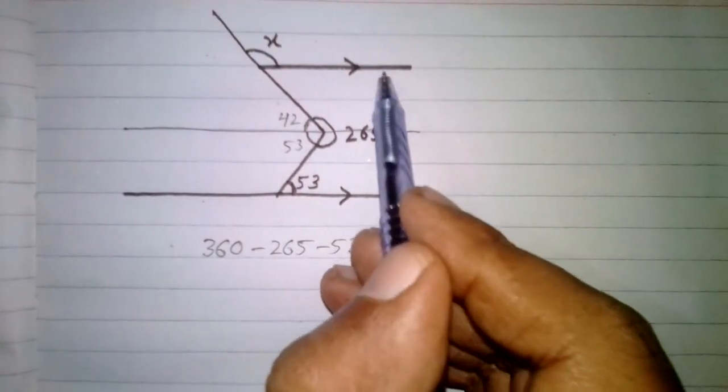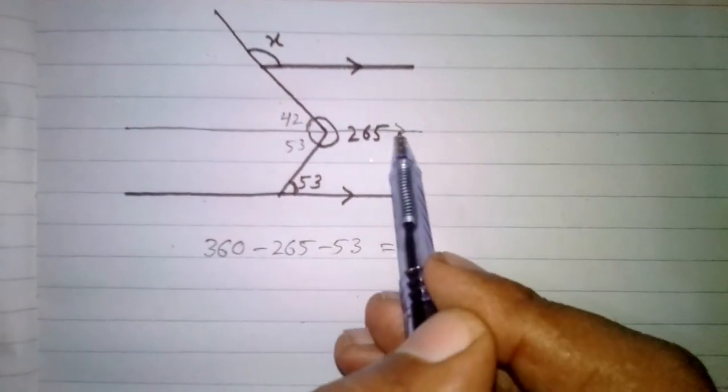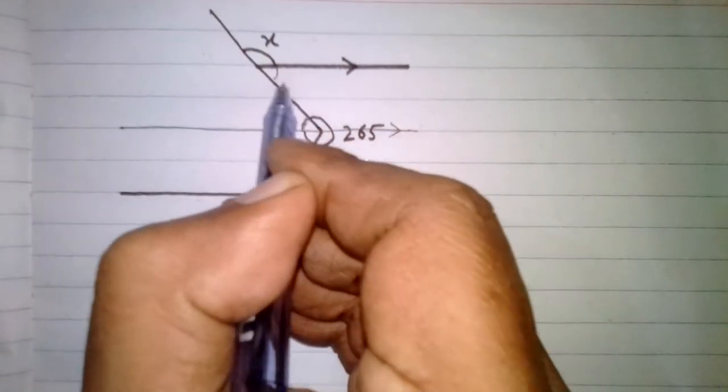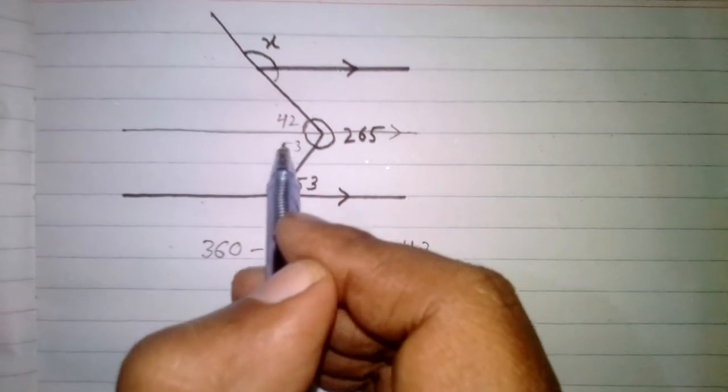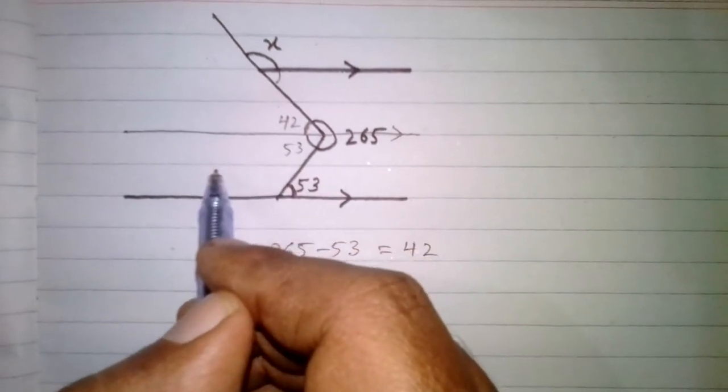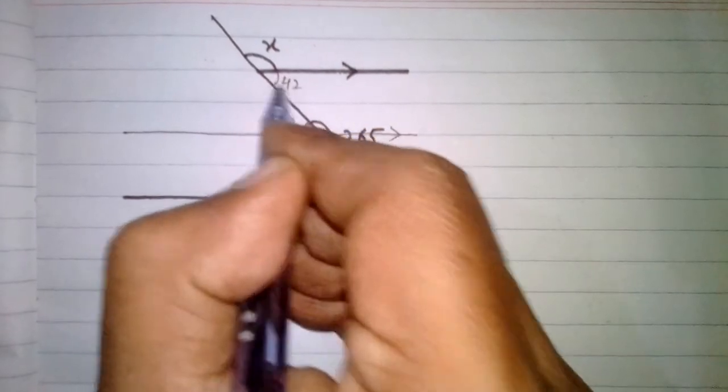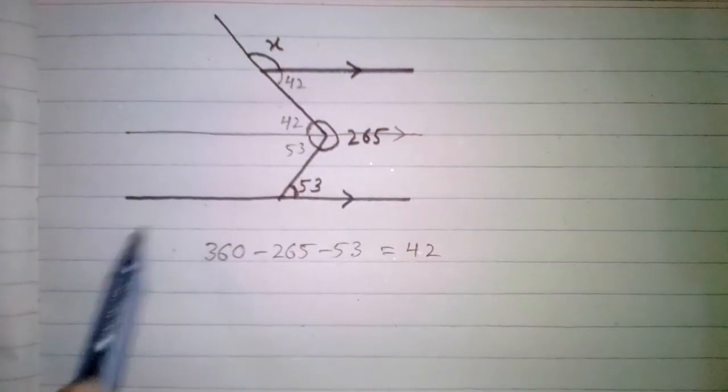Again we can see that these two lines are parallel and they are cut by a transversal, so this angle is equal to this angle because they are alternate angles. So the value of this angle is 42.